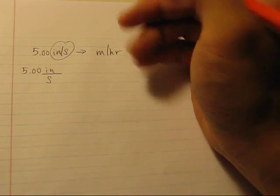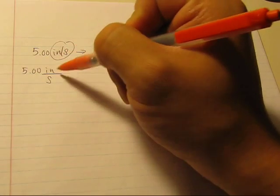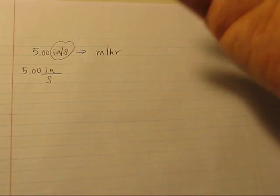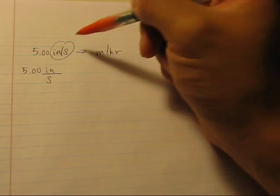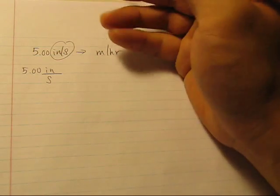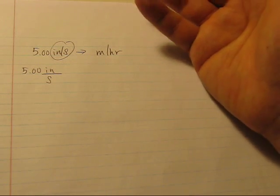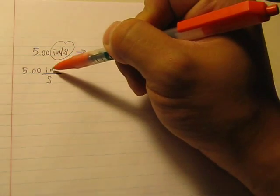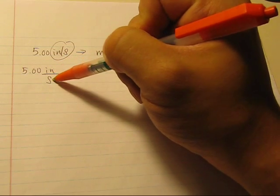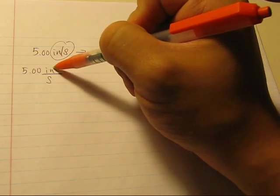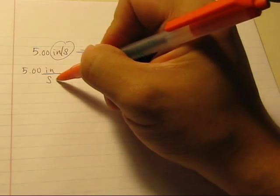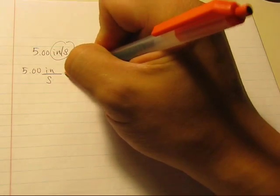And the reason why we do that is, when we write this, if we put this right here, a common confusion is that you may treat both units in the numerator. And we do not want that to happen. So what we would do here is to put inches over seconds so that you know inches is in the numerator, and the seconds is in the denominator.